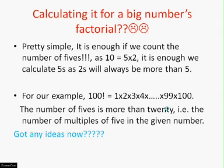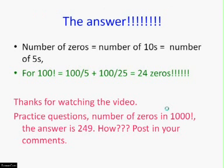So the answer is just divide 100 by 5 plus 100 by 25, so the number of zeros you get is 24.